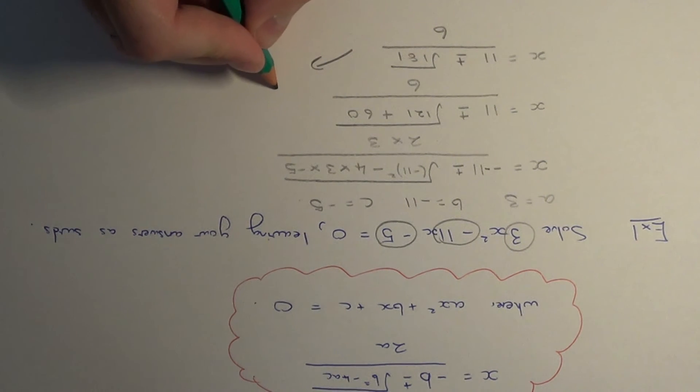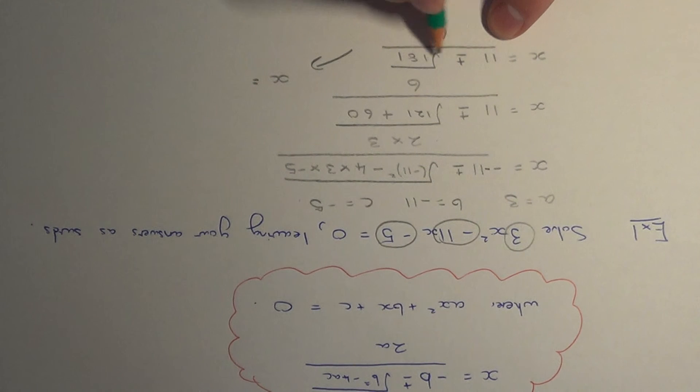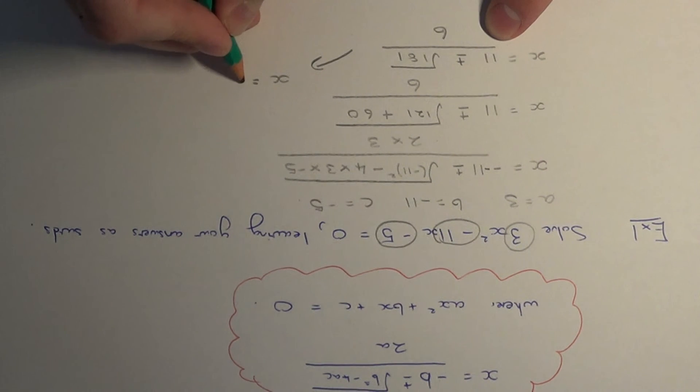This means that our two answers are... we just need to divide both of these by 6. So we've got 11 over 6 plus root of 181 over 6.